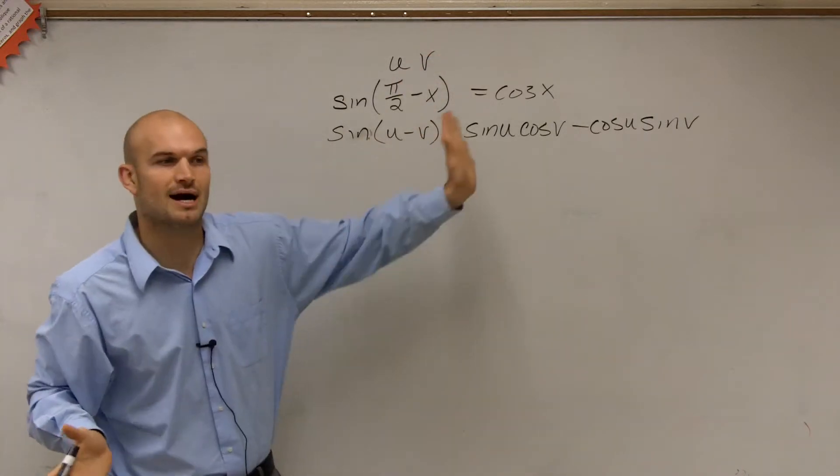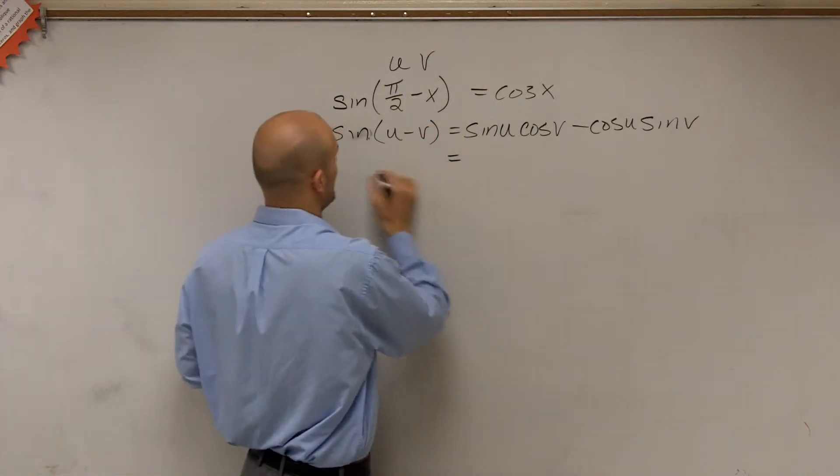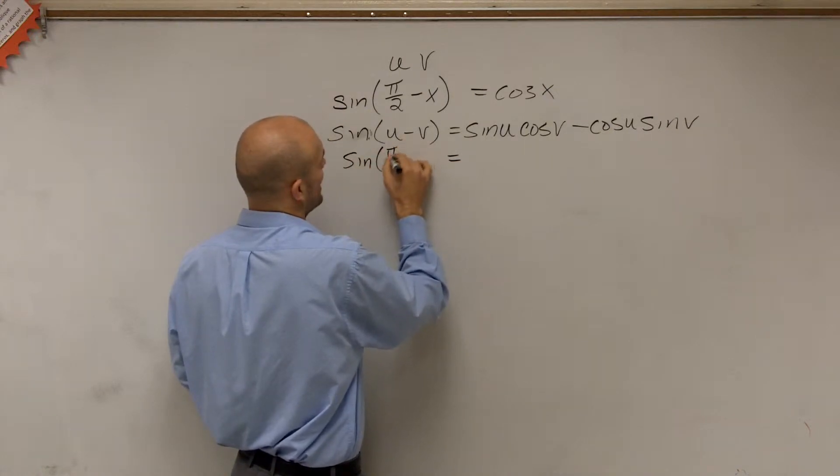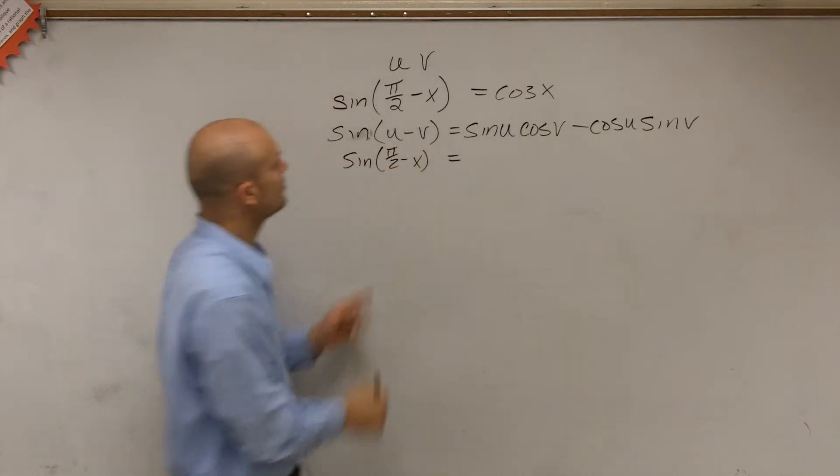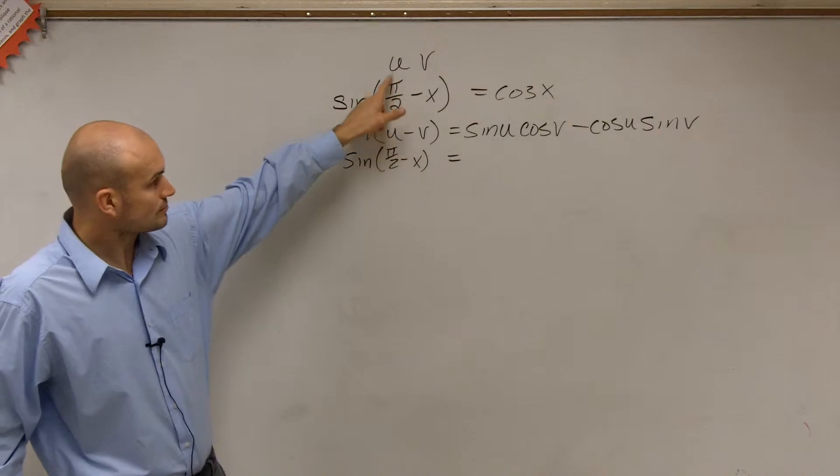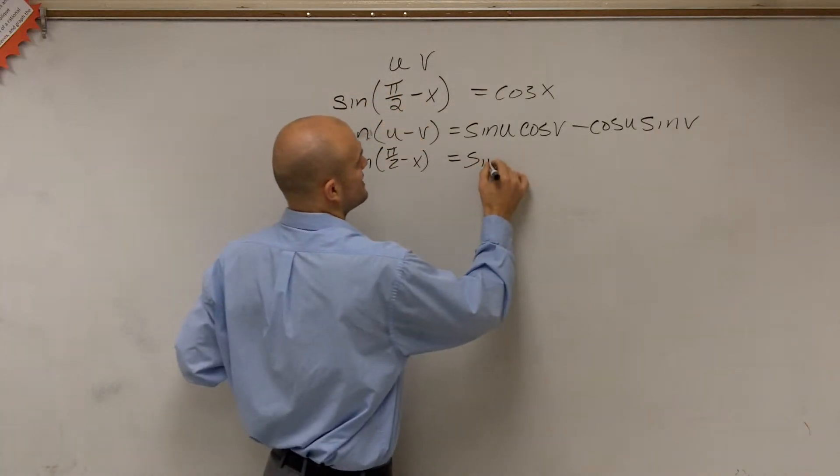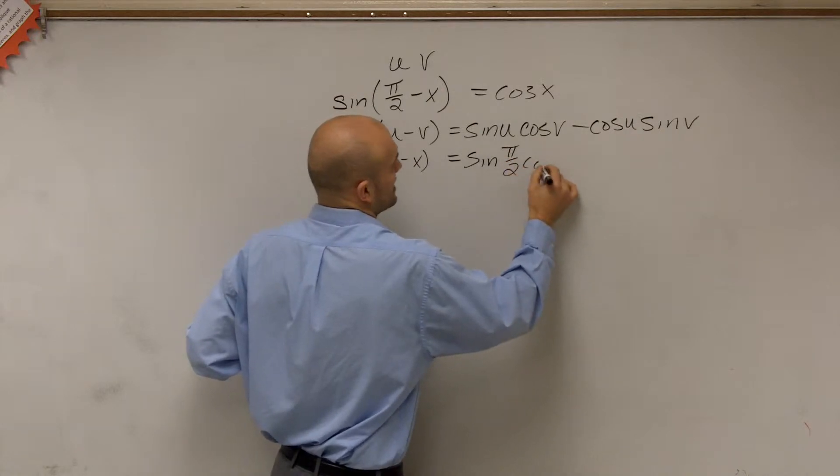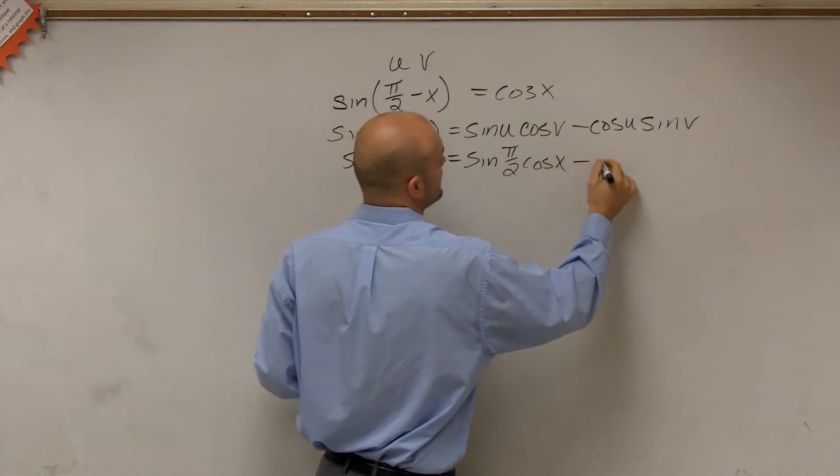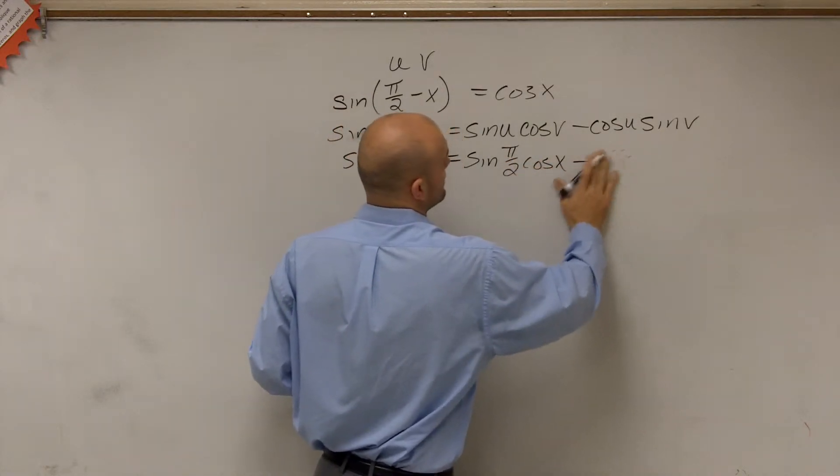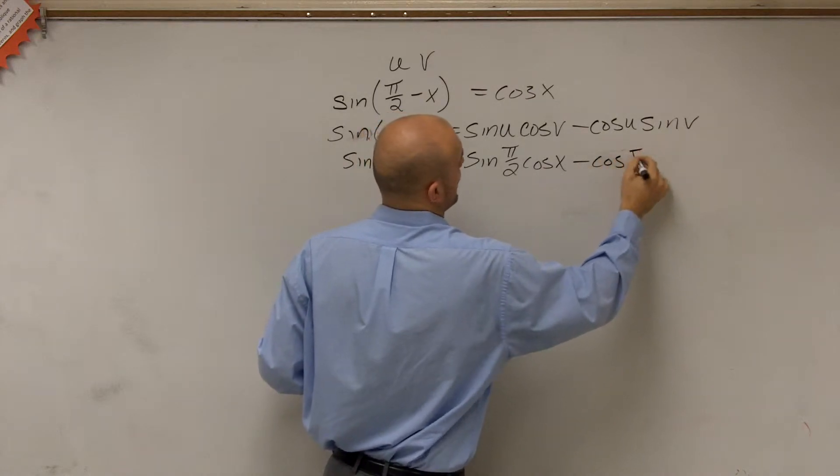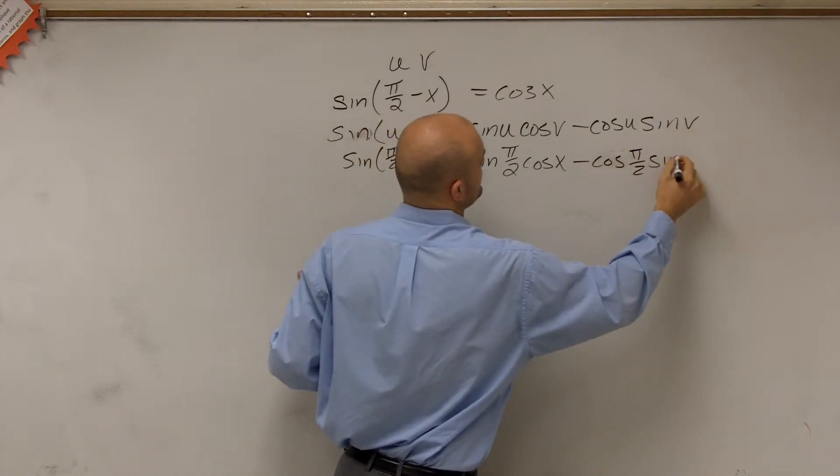Now what we're simply going to do is apply each one of these. So now I can rewrite sine of π/2 minus x where π/2 is my u and x is my v. So I have sine of π/2 times cosine of x minus cosine of π/2 times sine of x.